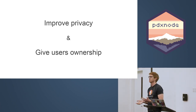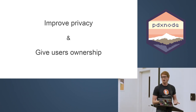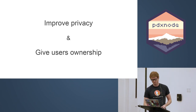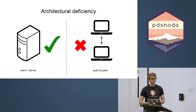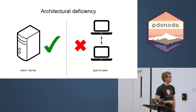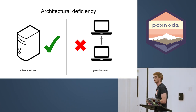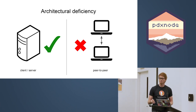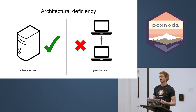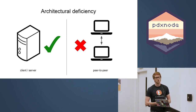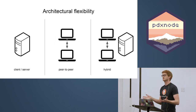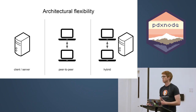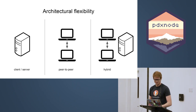So why talk about getting away from a client-server monoculture? We can improve the privacy of the web and improve ownership of the online experience for people. The peer-to-peer story on the web is pretty anemic. We can think of the web as an application platform for networked applications, so it would make sense to have not just one design for networking, but some flexibility — not only client-server, but also peer-to-peer architectures or a hybrid of the two to match exactly what you're trying to accomplish with your application.